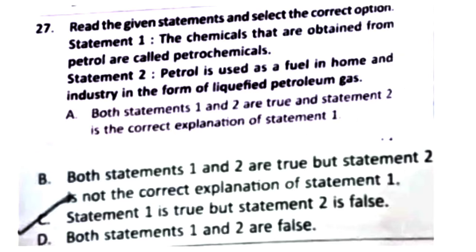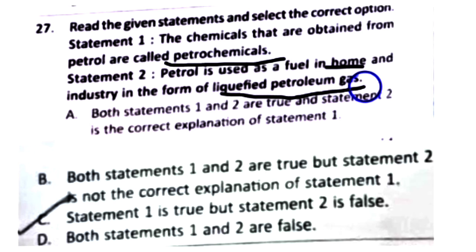Question 27: Statement 1 — chemicals obtained from petrol are called petrochemicals — this is true. Statement 2 — petrol is used as a fuel in homes and industry in the form of LPG — this is false, because LPG is a mixture of butane and propane, not petrol. So Statement 1 is true but Statement 2 is false. The right answer is Option C.